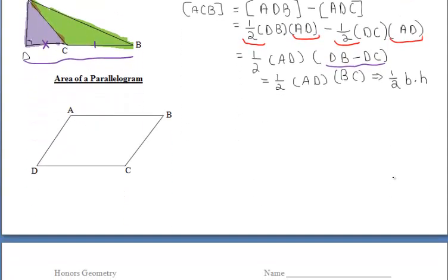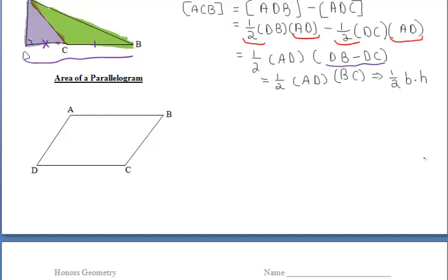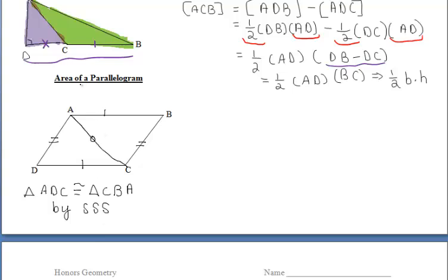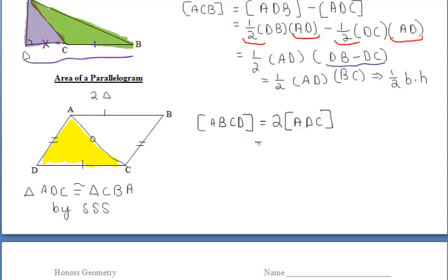Moving on to finding the area of our parallelogram. Since we already know how to find the area of triangles, let's try to create some triangles here to work with. If we draw in the diagonal AC, we've created two triangles. We know that opposite sides of the parallelogram are congruent, and using the reflexive property on AC, triangles ADC and CBA are congruent by side-side-side. So the parallelogram is made up of two congruent triangles. If we find the area of one triangle and multiply by two, we'll find the area of the parallelogram.